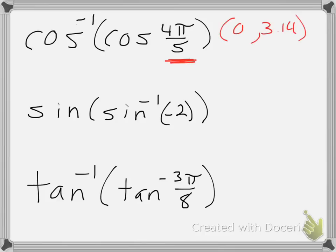And you could say, does the value of 4π over 5, does its decimal fall between 0 and 3.14? And if we check that, so if I say 4π divided by 5, that's approximately 2.51. So it does fall in that range.